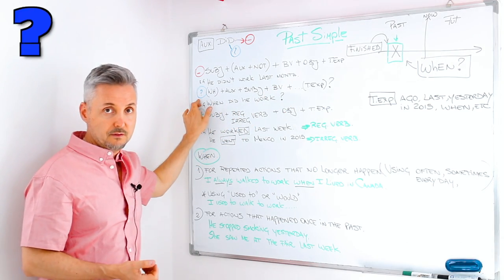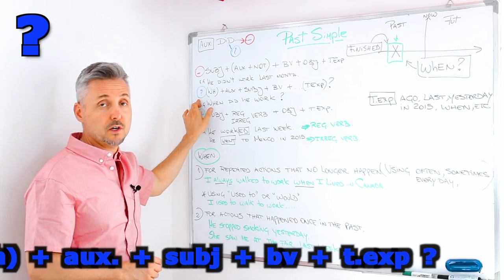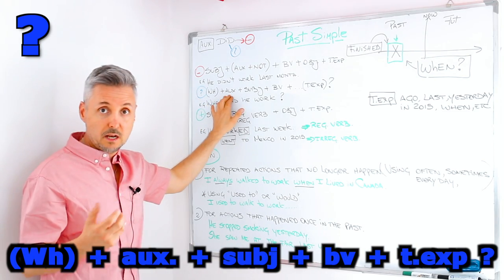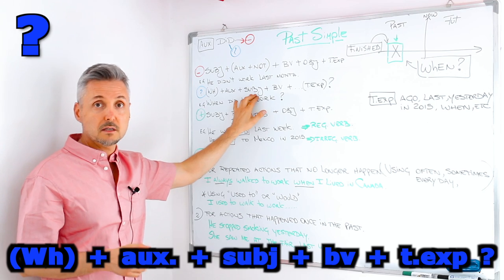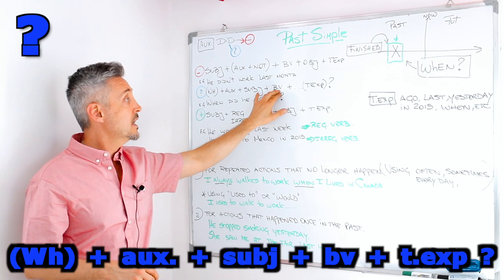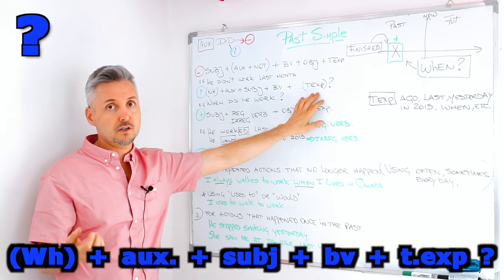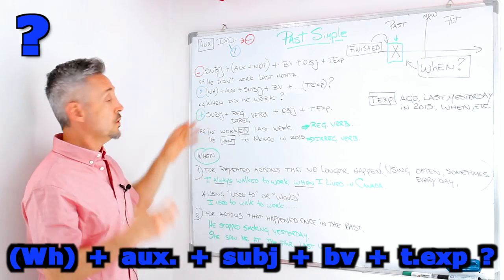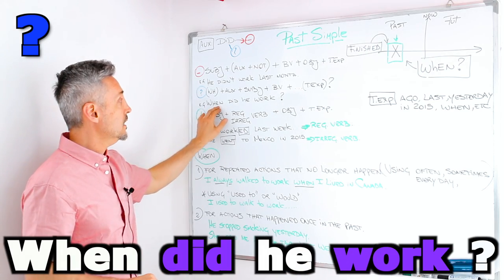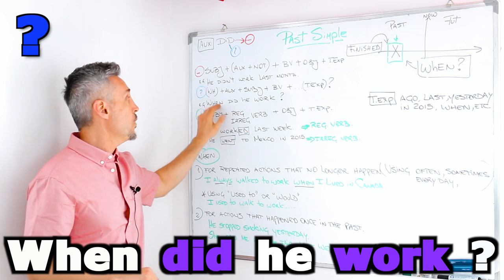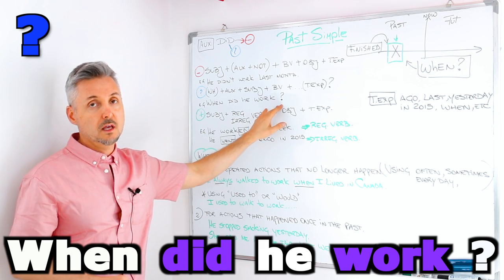So, interrogative. WH question word, if there is. Then the auxiliary. Then the subject. Then the base of the verb again. And then the time expression, if any. So in this case, I chose when. When did he work?